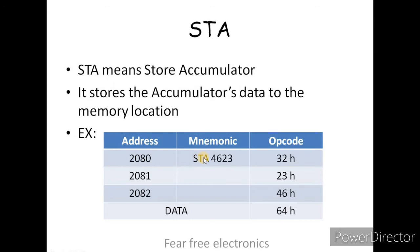The STA opcode has a hexadecimal value stored at address 2080. The address part of the STA instruction is two bytes — the lower-order address and the higher-order address. So the STA instruction is a 3-byte instruction in total: one byte for opcode and two bytes for the address operand.